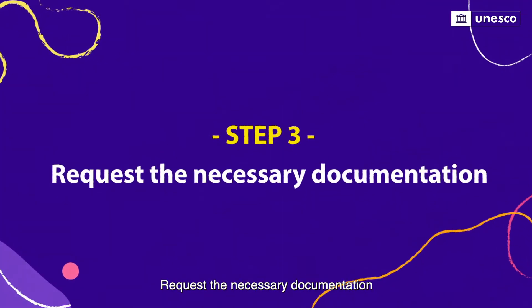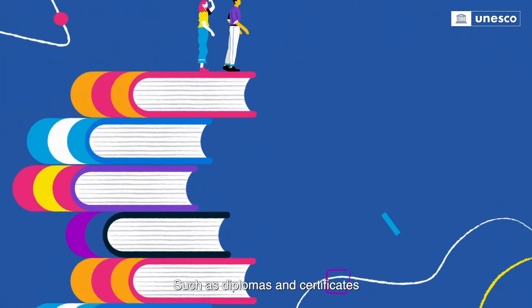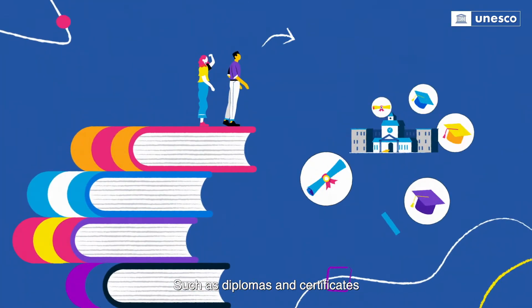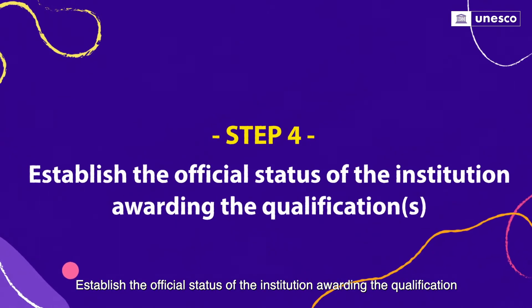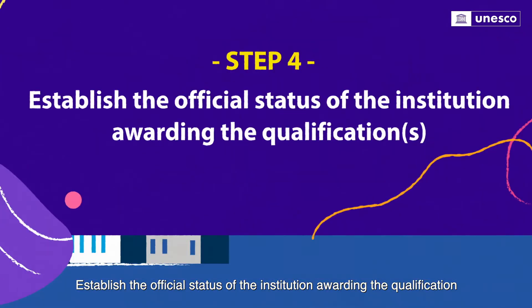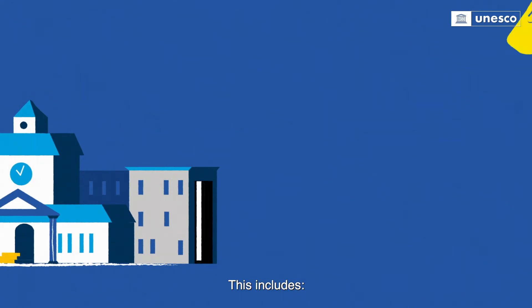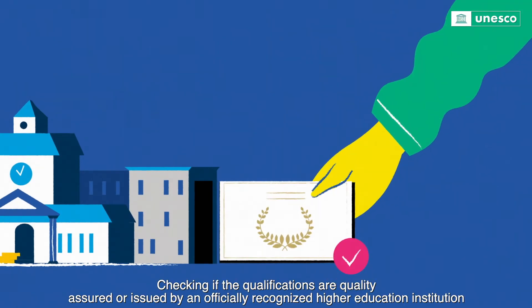Step 3: Request the necessary documentation, such as diplomas and certificates. Step 4: Establish the official status of the institution awarding the qualification. This includes checking if the qualifications are quality-assured or issued by an officially recognized higher education institution.